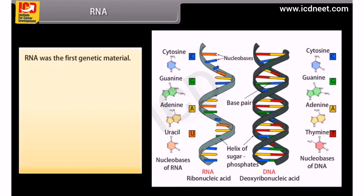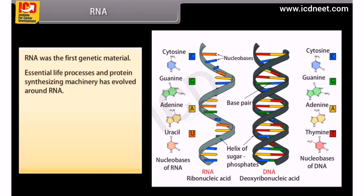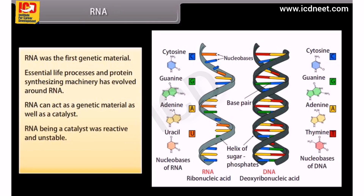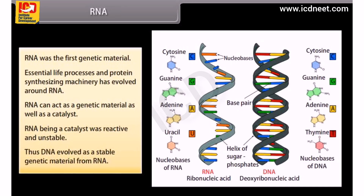RNA was the first genetic material. Essential life processes and the protein-synthesizing machinery evolved around RNA. RNA can act as a genetic material as well as a catalyst. However, RNA being a catalyst was reactive and unstable. Thus, DNA evolved as a more stable genetic material from RNA.